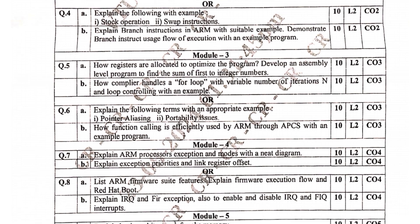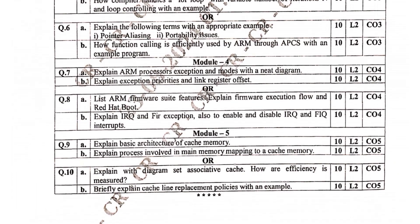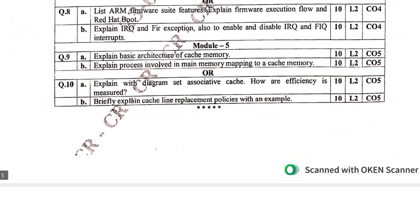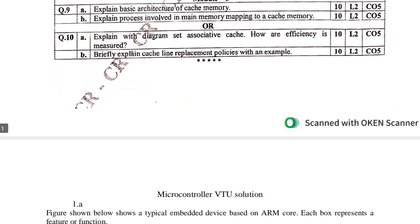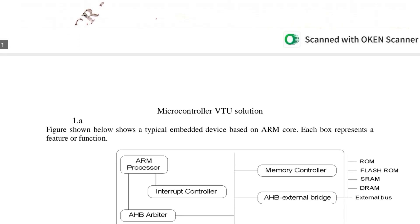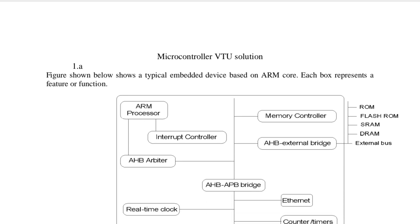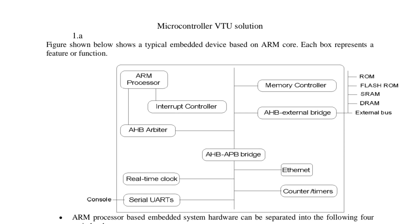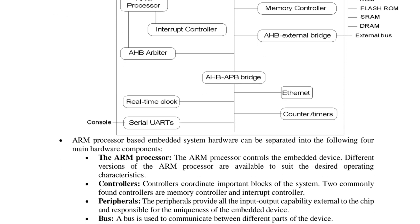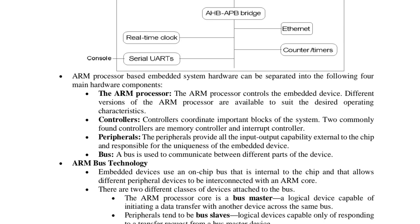Let's dive in. What to expect in the BCS402 exam: the question paper is split between Unit 1 to 3 — Architecture, Instruction Set, Memory, I/O, and Interfacing — and Unit 4 to 5 — Timers, Interrupts, Serial Communication — and Unit 6: Embedded System Basics. Most 10-mark questions focus on Architecture, Programming, or Peripheral Interfacing.